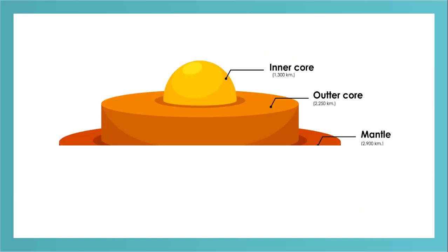The inner core is so hot and has so much pressure, the metals are squeezed so tightly together they can't move as a liquid. So the inner core acts as a solid and is the most inner part of the Earth.